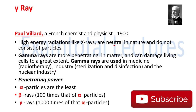Gamma rays are used in medicine for radiotherapy, and in industry for sterilization and disinfection. In the nuclear world, gamma rays are used to produce radioactivity. Comparing penetrating power: alpha particles have the least penetrating power of the three; beta rays are a hundred times more penetrating than alpha particles; and gamma rays have the highest penetrating power — a thousand times that of alpha particles.